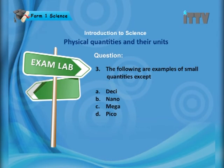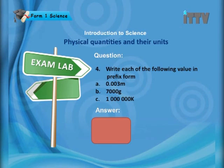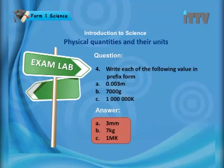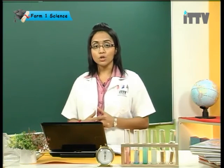In the exam lab, one question asks which of the following is a large quantity: A) deci, B) nano, C) mega, or D) pico. The correct answer is C — mega, which equals 10 to the power of 6. Another question asks to write values in prefix form: 0.003 meters is 3 millimeters; 7000 grams is 7 kilograms; and 1,000,000 Kelvin is 1 mega-Kelvin.